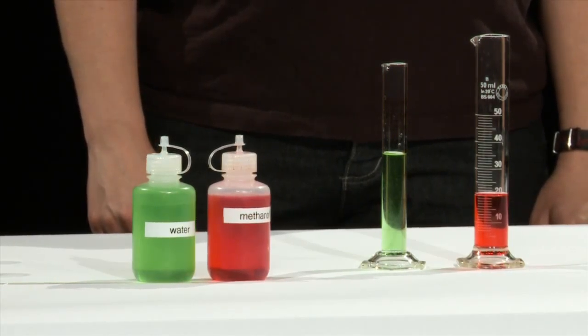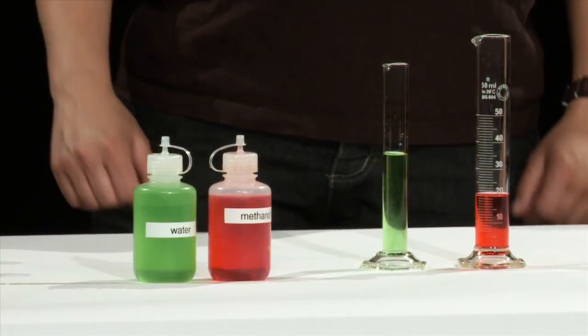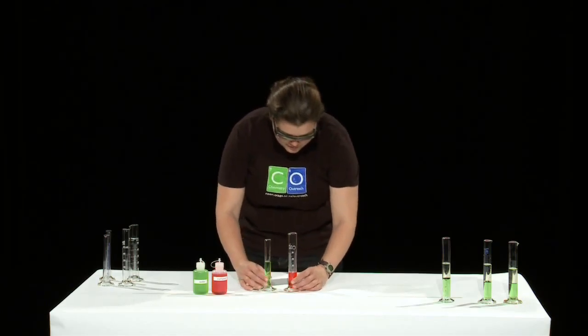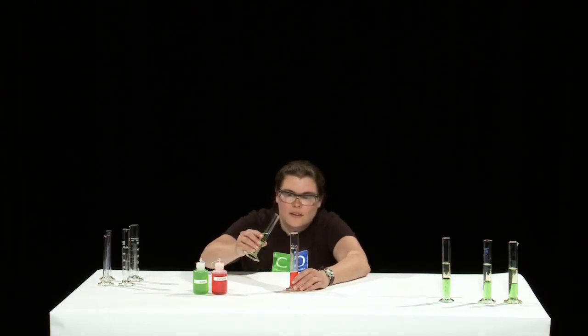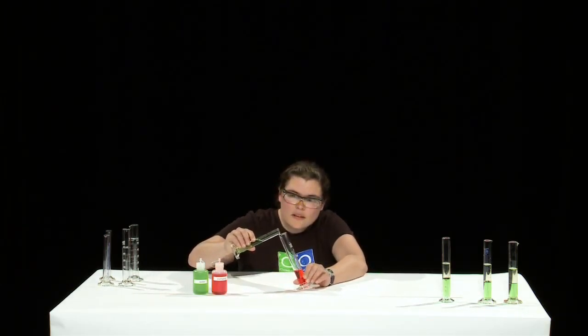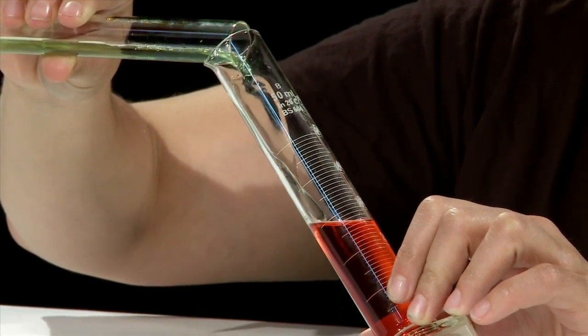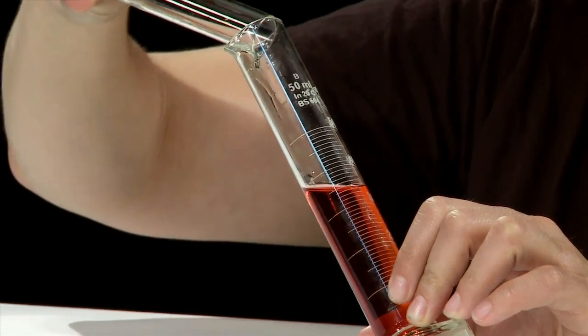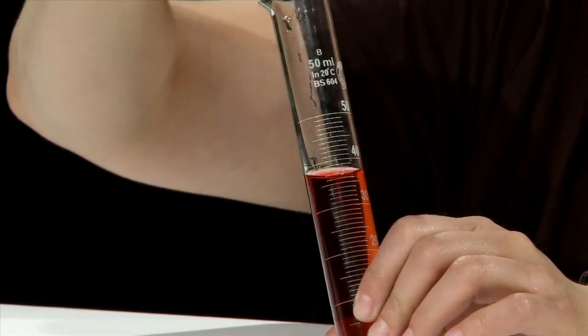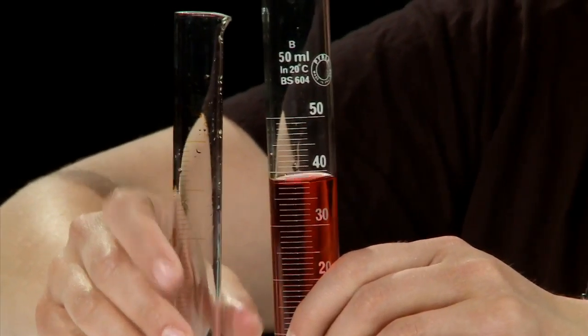So now the experiment is repeated with methanol instead of oil. Once again 20 milliliters of water has been measured out and then it is added to 20 milliliters of methanol. This time the two liquids mix to give one layer. This shows that those liquids are miscible.